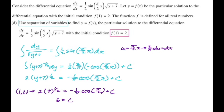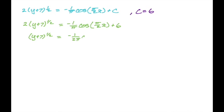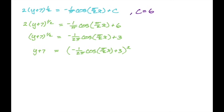Solving for y: divide both sides by 2 to get the square root of y plus 7 equals negative 1 over 2 pi times cosine of pi over 2x plus 3. Square both sides to get y plus 7 equals that quantity squared. Subtract 7: y equals negative 7 plus the quantity negative 1 over 2 pi times cosine of pi over 2x plus 3, all squared. That is the particular solution.